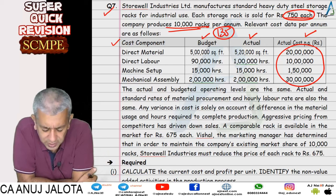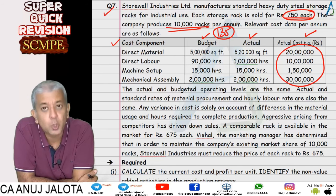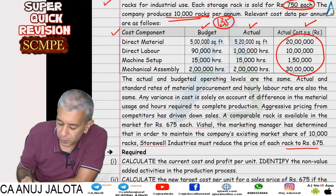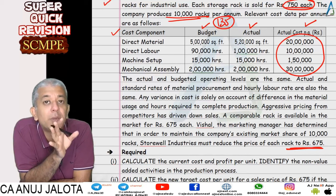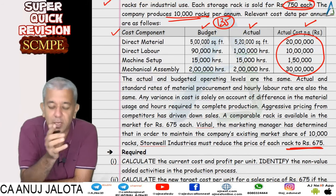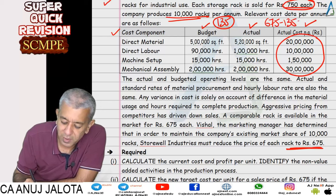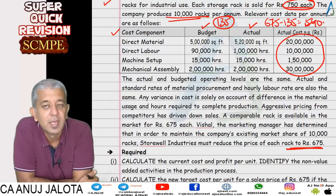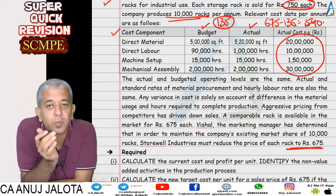In part two, competition has come and we need to reduce our price to 675, but we still want to maintain our profit of 135. So the target cost becomes: 675 minus 135 = 540. We need to cut down our cost to 540 rupees. In part three, they ask for ideas on how to cut down the cost.